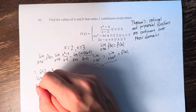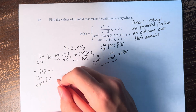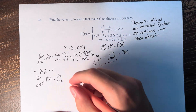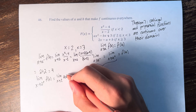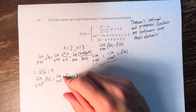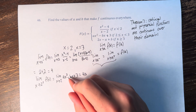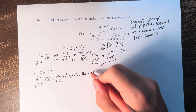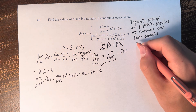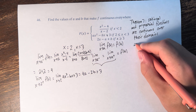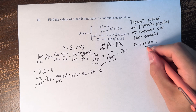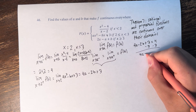The limit as x approaches 2 from the right of f(x) uses x squared minus bx plus 3, since we're looking at values greater than 2. Plugging in, we get a times 2 squared minus b times 2 plus 3, which is 4a minus 2b plus 3. For the function to be continuous here, 4a minus 2b plus 3 must equal 4, so 4a minus 2b equals 1.